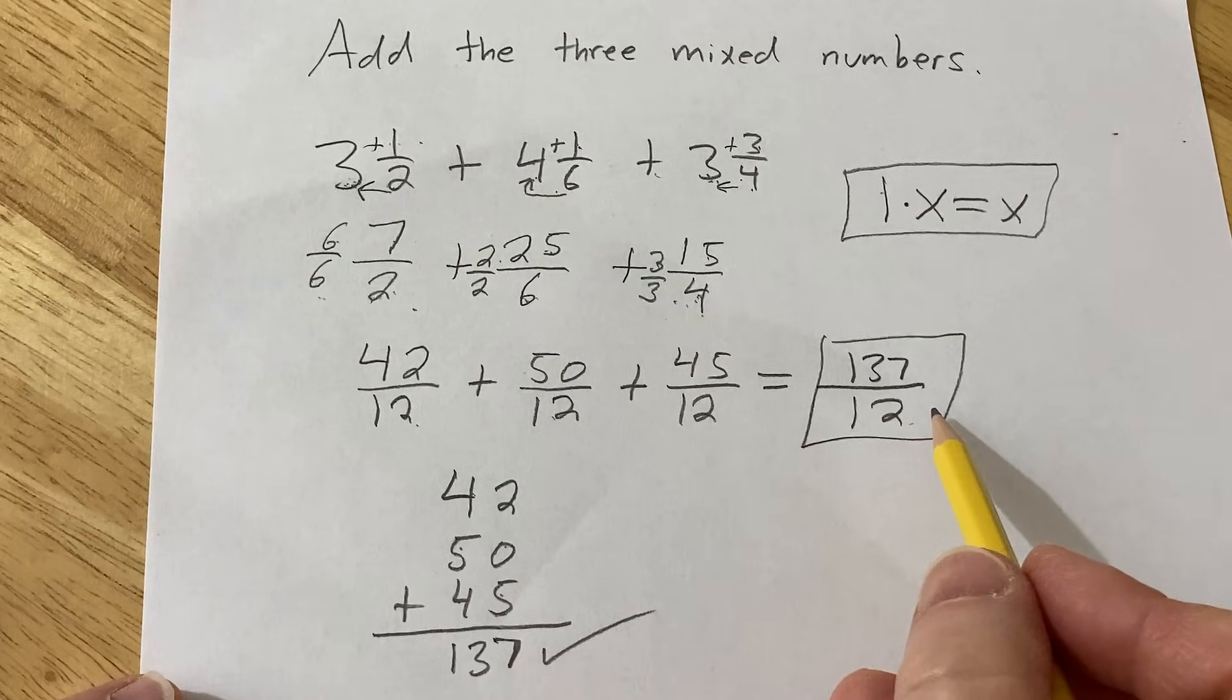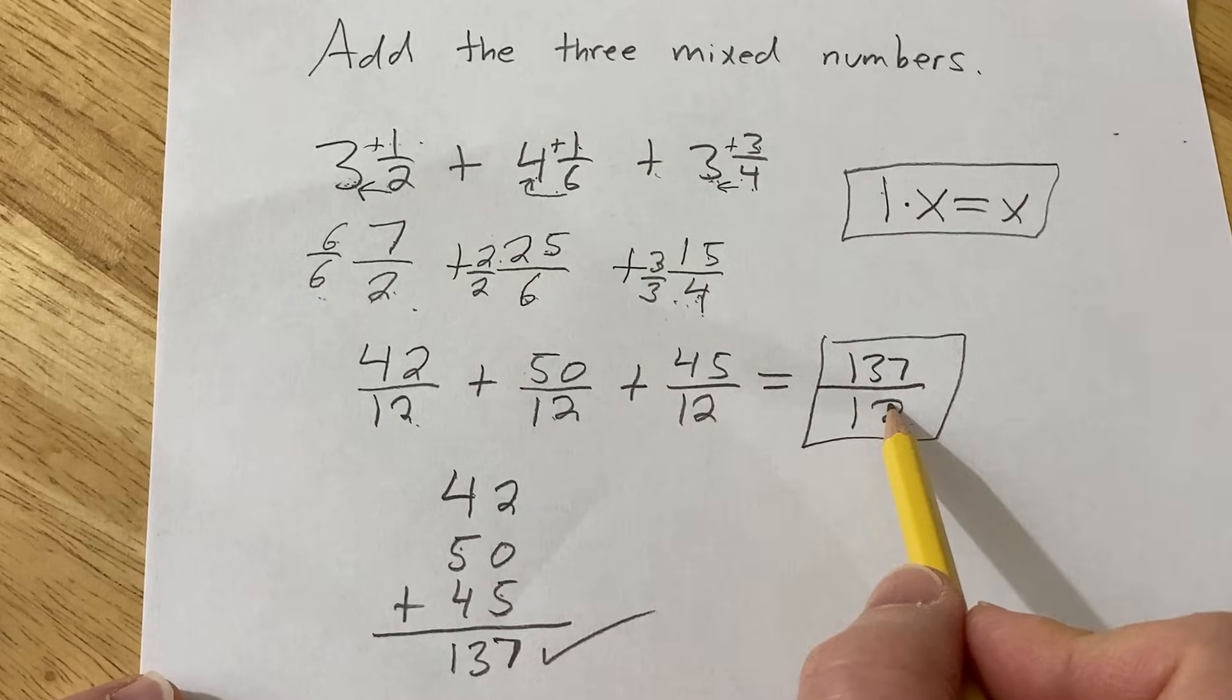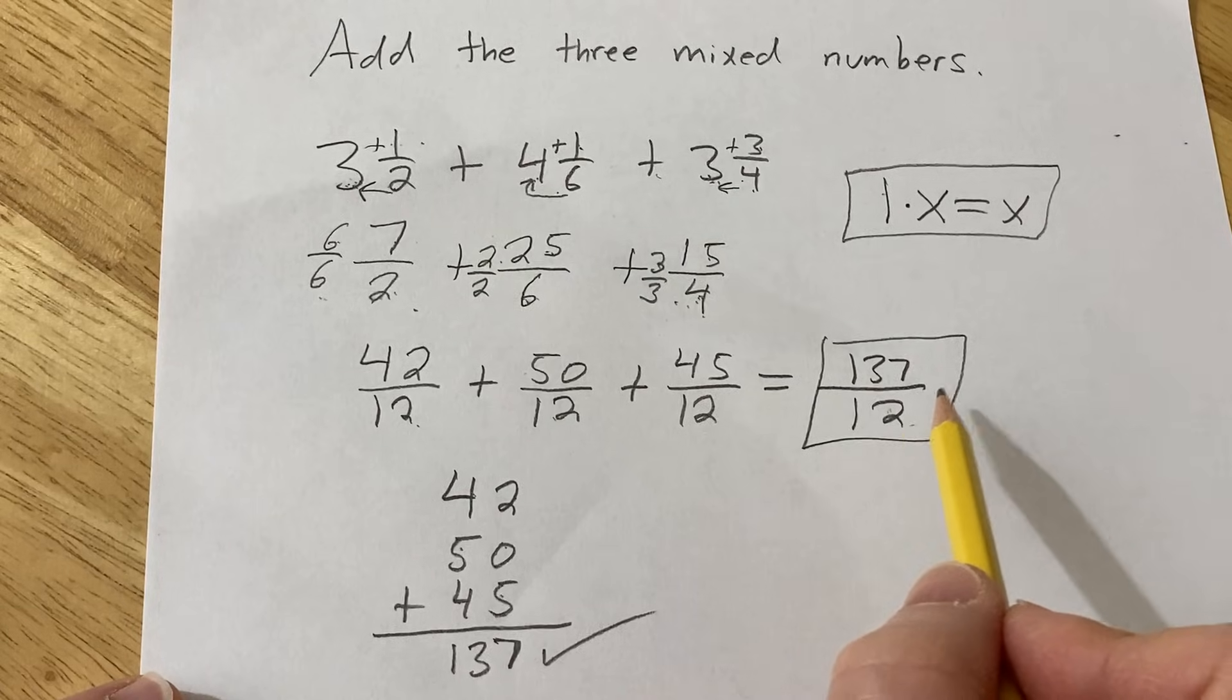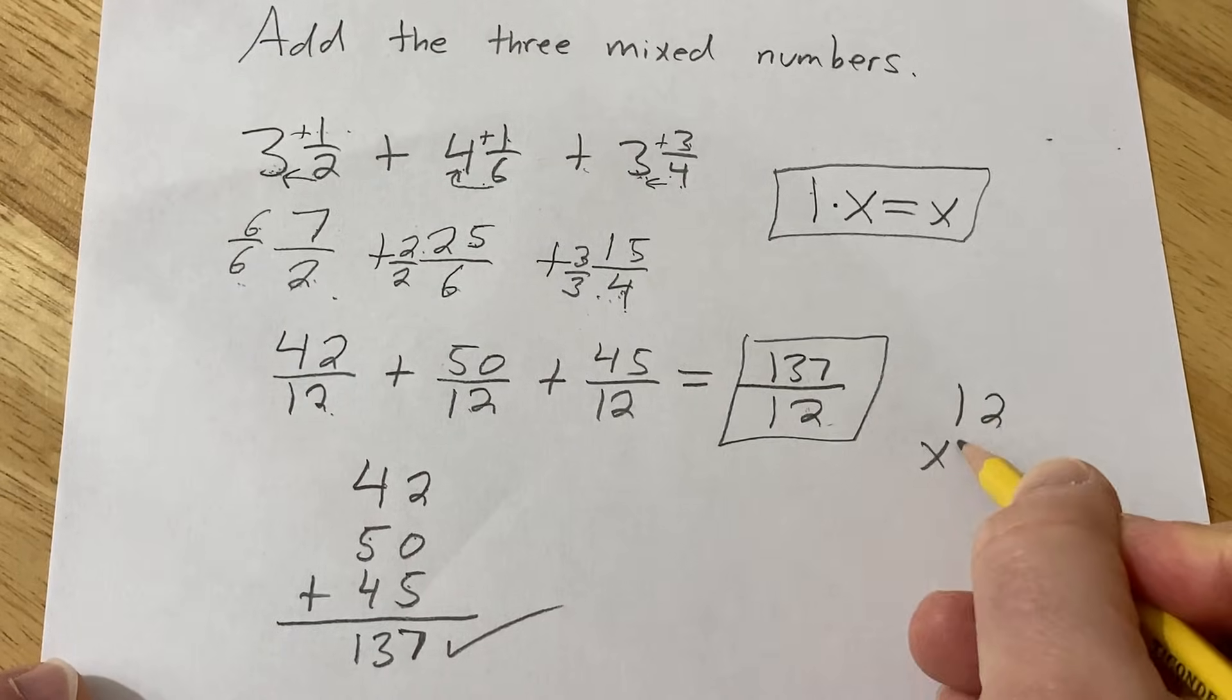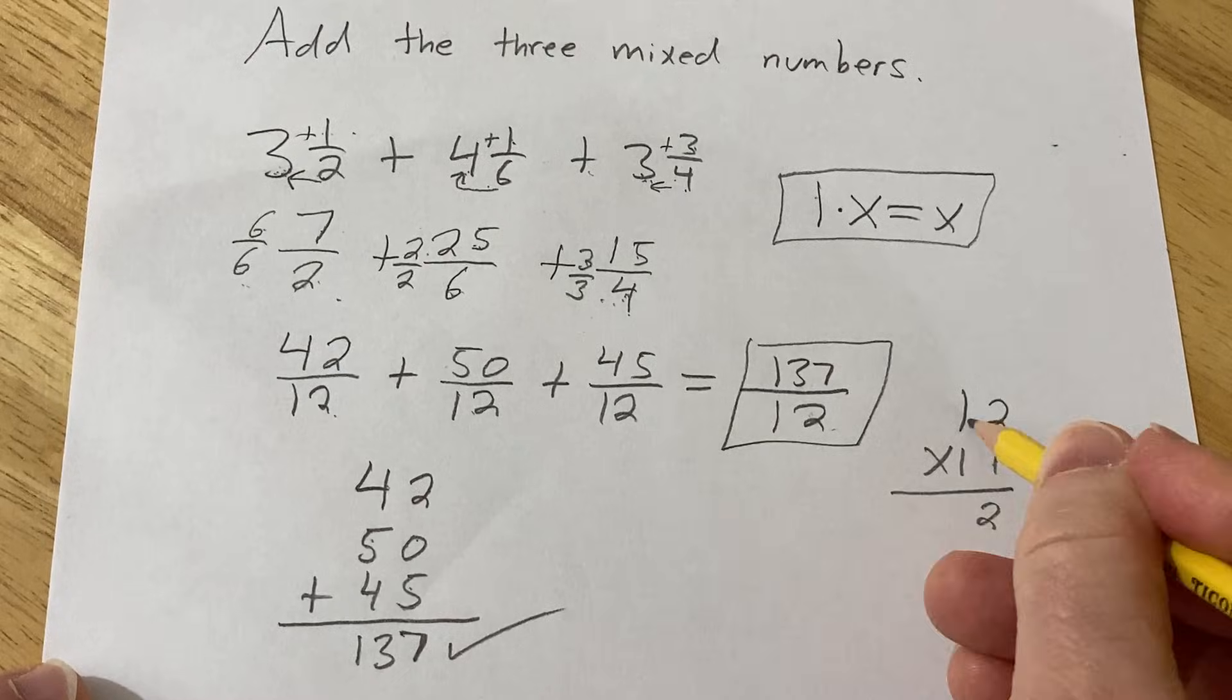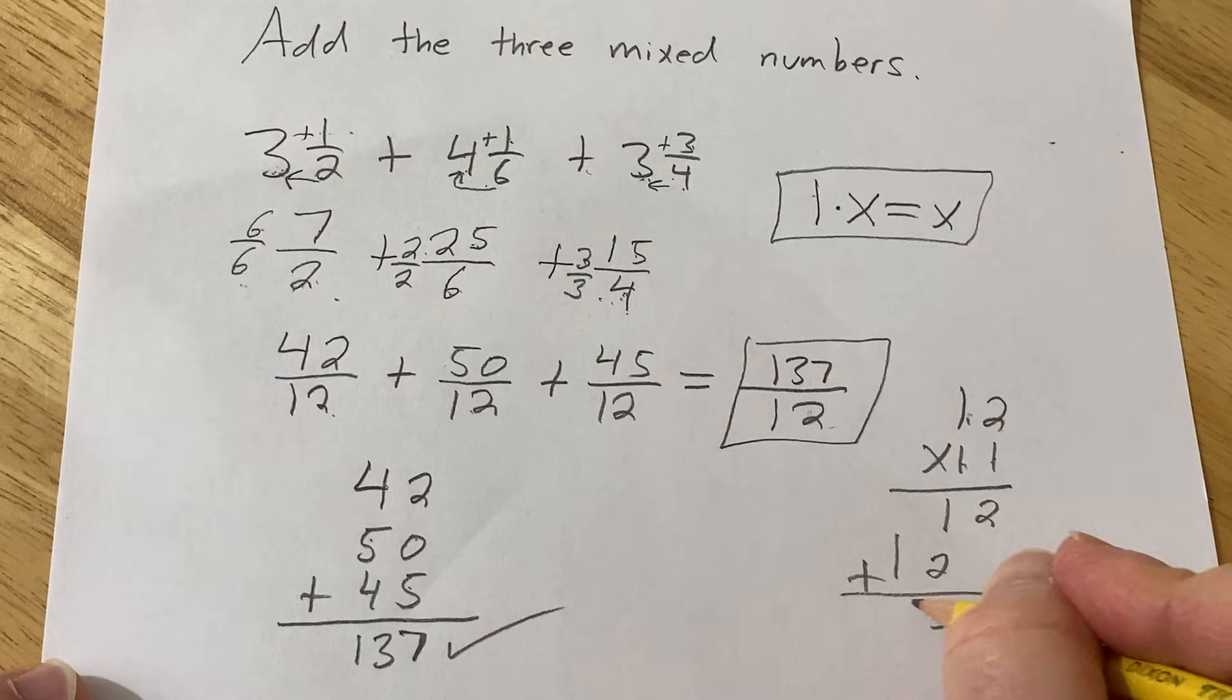So you can leave it like this. This is called an improper fraction, or you can convert it into what's called a mixed number, which is what we had up here. So to do that, you have to think about how many times 12 goes into 137. Well, we know 12 times 12 is 144, so it's going to be less than that. But 12 times 11, what is that? 1 times 2 is 2. 1 times 1 is 1. 1 times 2 is 2. 1 times 1 is 1. So if we add, we get 2, 3, 1. So 12 times 11 is 132, right?